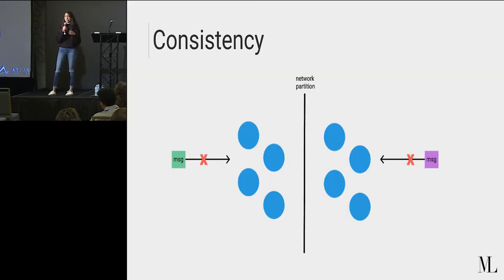So in a consistency preserving system, we would rather allow our system to halt than let inaccurate transactions through. So let's go into this. So let's take this network here with all these different blue nodes and say that it's partitioned across the middle. So when I say network partition, I'm talking about some sort of disruption that doesn't allow nodes from either side to communicate with each other. So in this case, we have a green message trying to get through to this half and a purple message trying to get through to the other half. But because we're trying to preserve consistency, we're not going to let either of those messages through. Rather, we're going to completely halt to make sure that our whole system still remains in agreement, even though there's this partition.